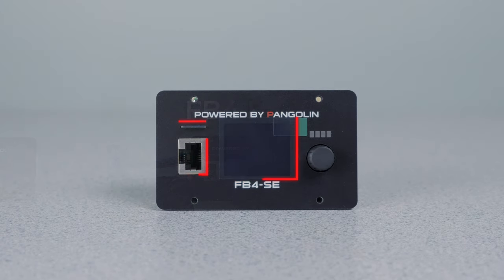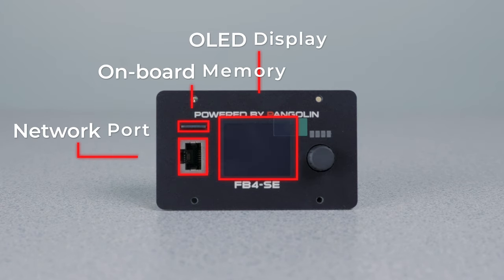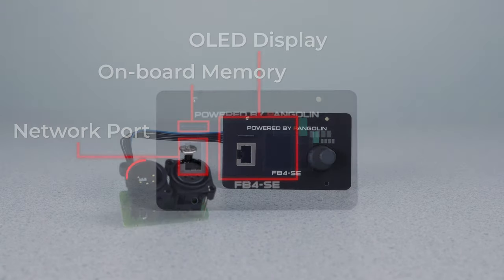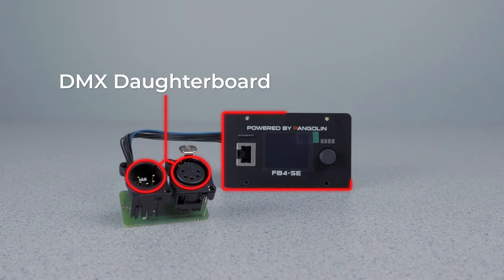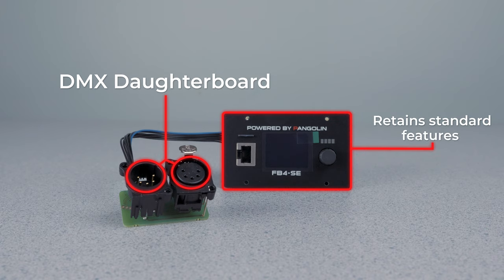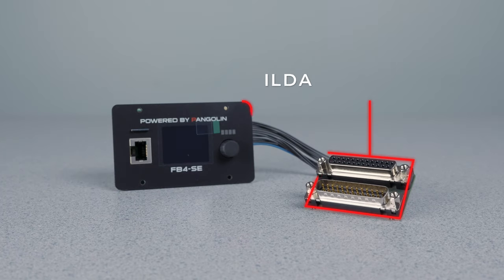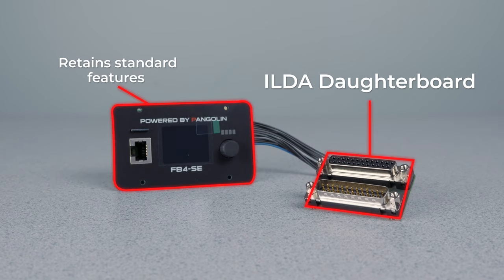FB4 Standard features our FB4 mainboard, a network port, built-in onboard memory, and an OLED display. FB4 DMX retains the same features as Standard, but is included with a DMX dotter board to allow for DMX in and out. FB4 ILDA also retains the same functions as Standard, but instead of DMX, it's included with an additional ILDA dotter board for ILDA in and out.